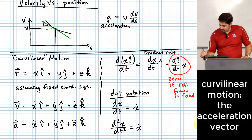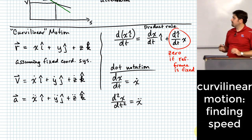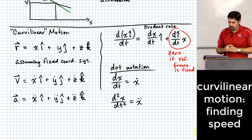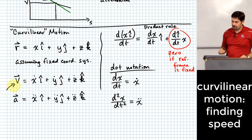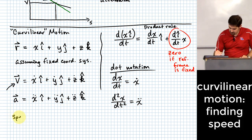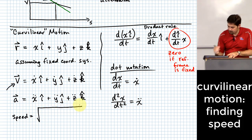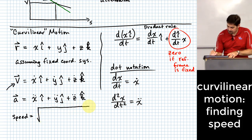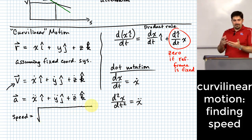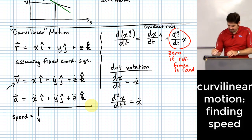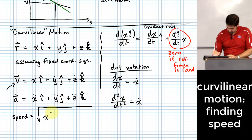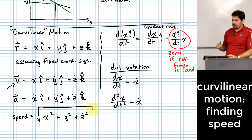If you want to know the speed of a particle and you know your velocity vector, you take the magnitude. You compute the square root of (x-dot² + y-dot² + z-dot²), and that gives you overall speed.